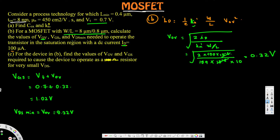Part (b) is complete. Now let's go to part (c). Part (c) asks: for the device in (b), find the values of V_OV and V_GS required to cause the device to operate as a 1000 Ω resistor for very small V_DS.